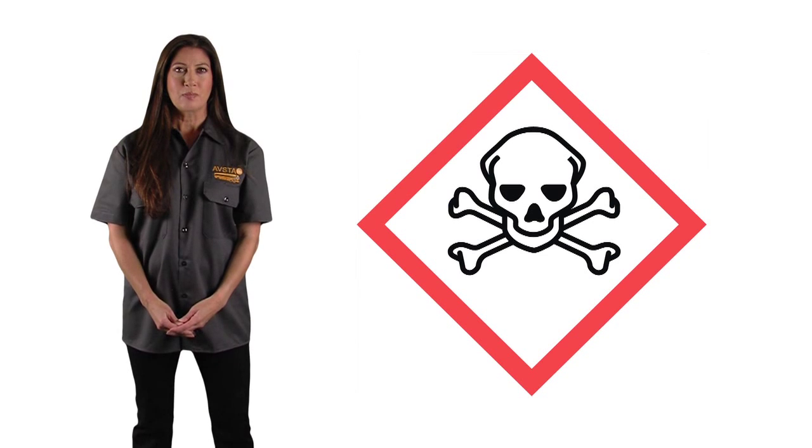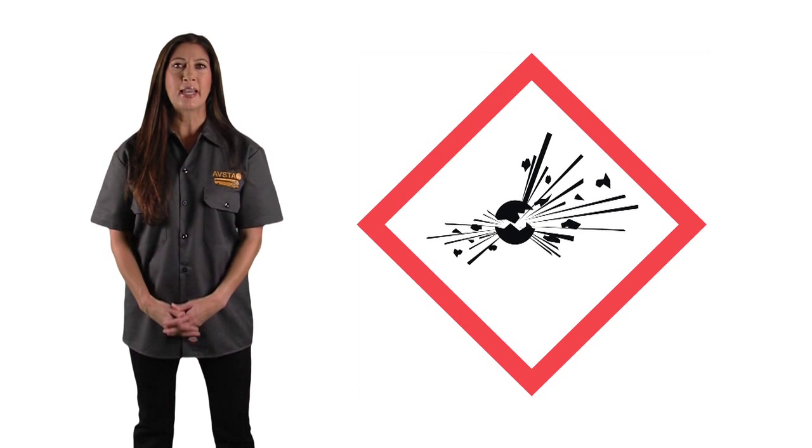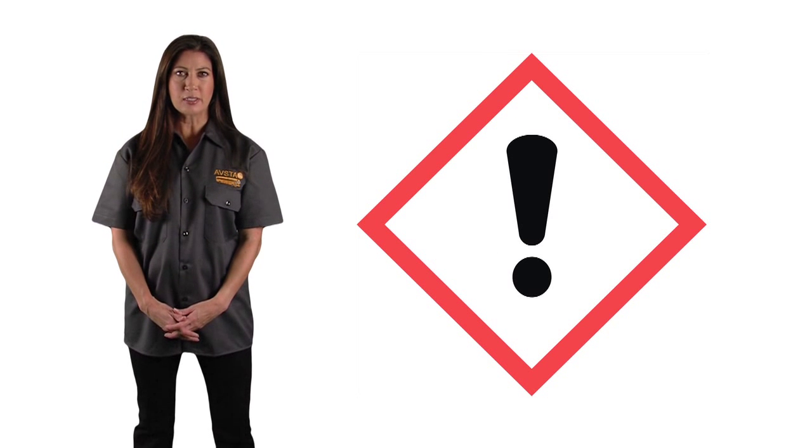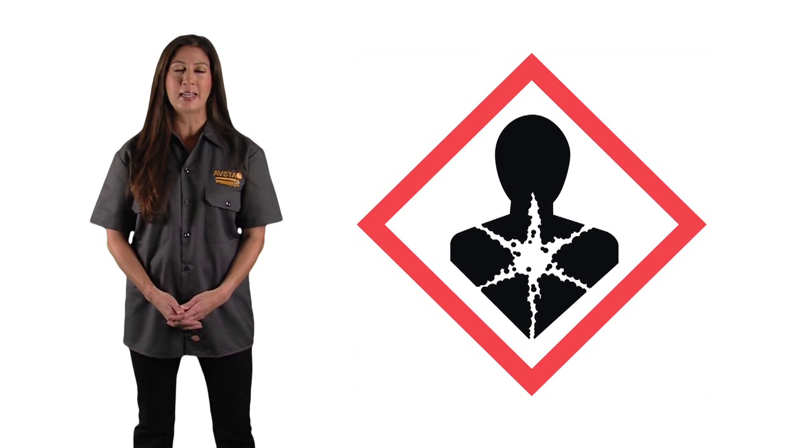This is Antelope Valley Schools Transportation Agency training on the revised hazardous material identification labels. OSHA requires AVSTA and other agencies to educate and inform their employees about hazardous materials they may be exposed to. The new labeling system is a revision of OSHA's hazard communication standards as an international standardized approach to label elements and safety data.